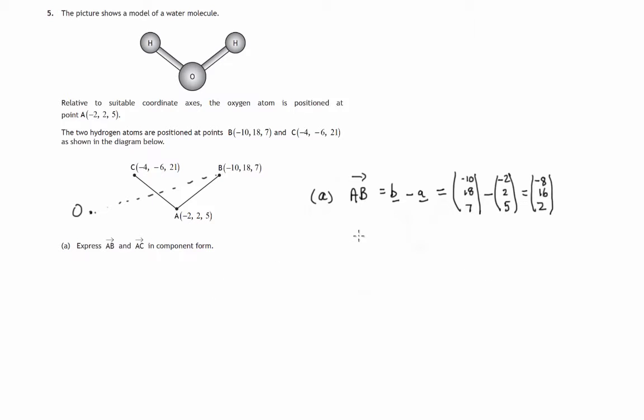And let's do a similar calculation for the journey from a to c, it's little c minus little a, these two position vectors. Components of c from the origin out to c, negative 4, negative 6, 21. And components of a, negative 2, 2, 5.